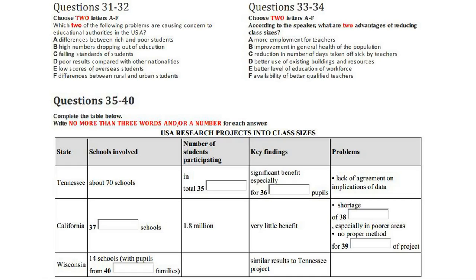We have to remember that reducing class sizes does have one obvious drawback — it's expensive. It requires more teachers and possibly more classrooms, equipment, and so on. On the other hand, if smaller classes really do work, the eventual economic benefits could be huge. Better education would mean workers did their jobs more efficiently, saving the country millions of dollars. It would also mean people were better informed about their health, bringing savings in medical costs and days off sick. There's plenty of anecdotal evidence about the effect on students' behaviour, but let's look at three research projects carried out in the USA in the last couple of decades.